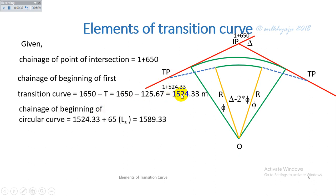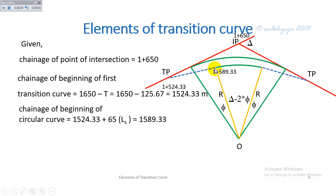The chainage of the beginning of the circular curve is calculated as the chainage of tangent point T1 plus the length of the transition curve, and is calculated as 1589.33 meters. This is the chainage of the beginning of the circular curve.